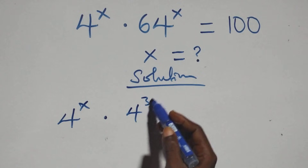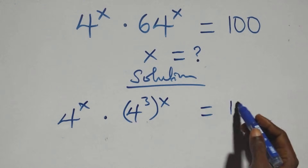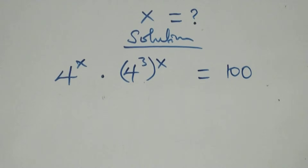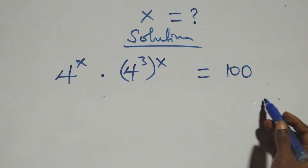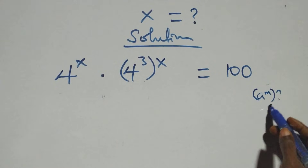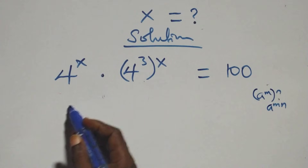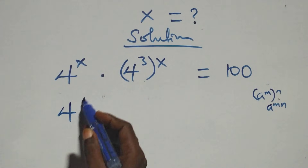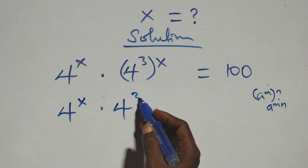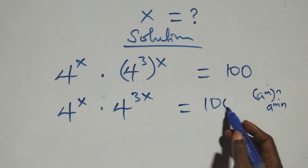...4 raised to the power 3, then raised to the power x, equals to 100 on this side. This follows the rule: when we have a raised to power m raised to power n, this is the same as a raised to power m times n. So the power multiplies, giving us 4 raised to power x times 4 raised to power 3x, equals to 100.